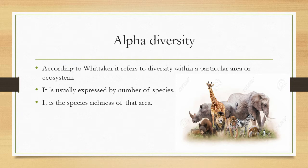Alpha diversity is usually expressed in numbers of species — it is the species richness of that area. That is exactly what you can call alpha diversity. I will go through even more examples later on in other videos.